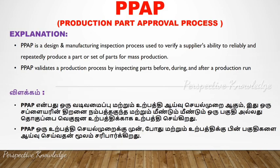PPAP is the Production Part Approval Process. It is a design, manufacturing, and inspection process used to verify a supplier's ability to reliably and repeatably produce a part or set of parts for mass production. PPAP validates a production process by inspecting parts before, during, and after the production run.